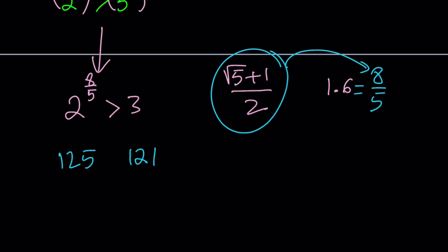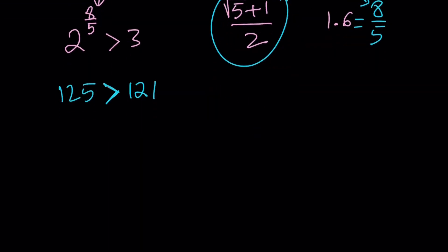So let's go ahead and start by comparing. 125 > 121. Do you agree? And let's go ahead and square root both sides. When we do, we're going to get 5√5 > 11. Awesome.